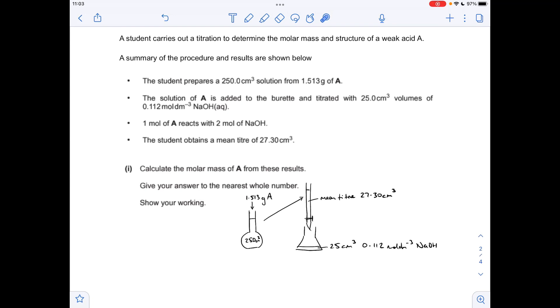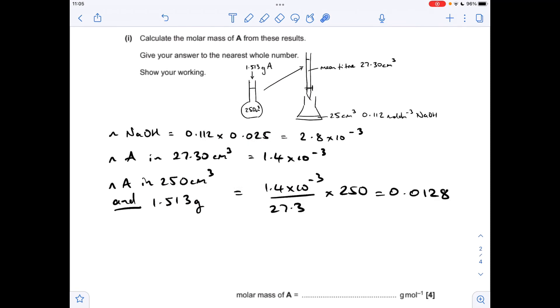First thing we're going to do is work out the moles of sodium hydroxide, concentration times volume, but remember to put the volume into decimetres cubed. So that's coming out at 2.8 times 10 to the minus 3. The moles of A that must have been present in the mean titra will be half of that, which is obviously 1.4 times 10 to the minus 3. So now we need to work out how many moles were in the 250 cm3, which is going to be the same as the moles in the 1.513 grams. To do that we divide by the mean titra, that's going to give us the moles in 1 centimetre cubed and then multiply by 250, which gives 0.0128.